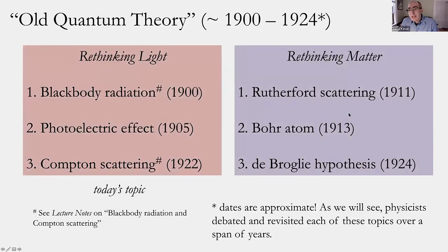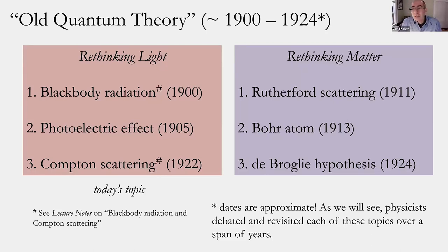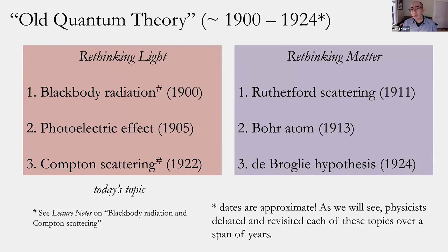We'll spend this class session and the next one talking about what came to be known as old quantum theory. Of course, it only became known as old quantum theory once there was a new quantum theory that seemed to replace it. Physicists themselves introduced the term 'old quantum theory' — by the mid to late 1920s they began referring by that term to the collection of work that unfolded between around 1900 and 1924.